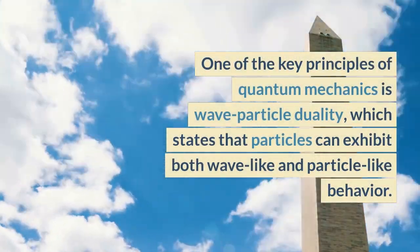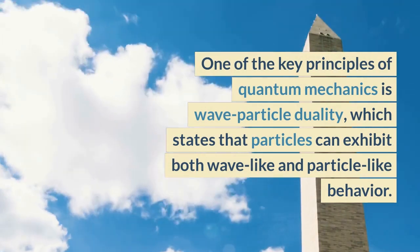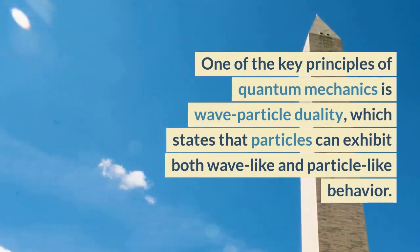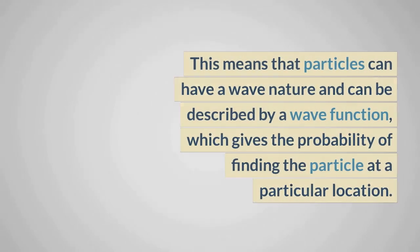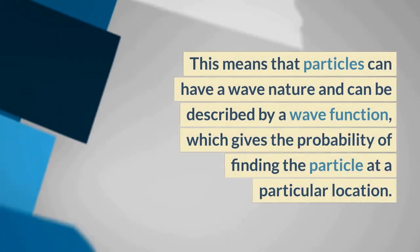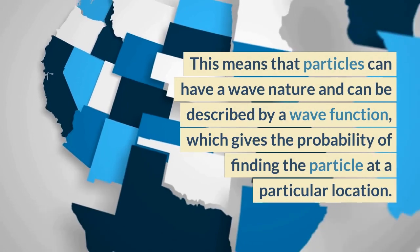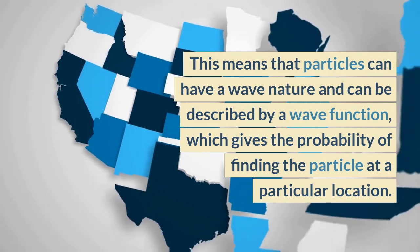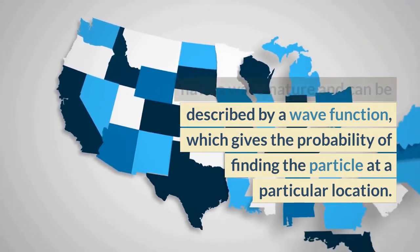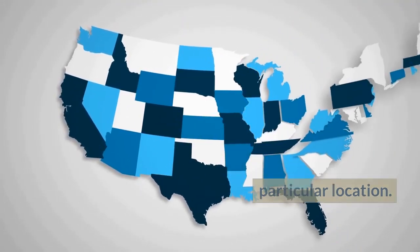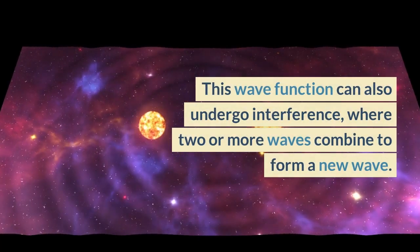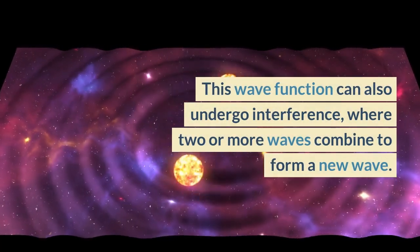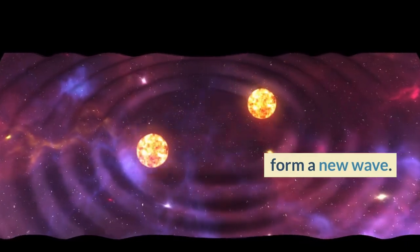One of the key principles of quantum mechanics is wave-particle duality, which states that particles can exhibit both wave-like and particle-like behavior. This means that particles can have a wave nature and can be described by a wave function, which gives the probability of finding the particle at a particular location. This wave function can also undergo interference, where two or more waves combine to form a new wave.